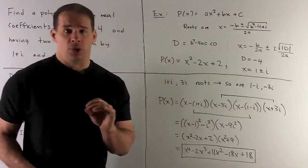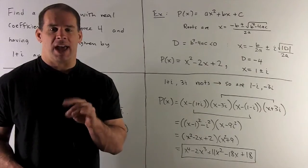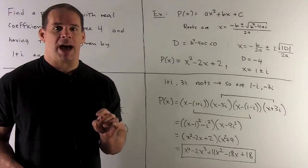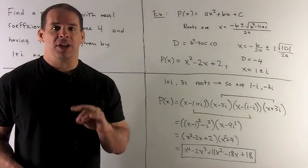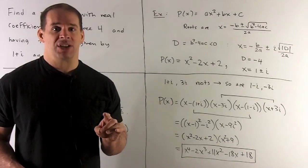For the other pair, you can grind that out. Or you can notice, I can write these as x minus 1 plus minus i. Then your difference of two squares is going to be x minus 1 squared minus i squared.